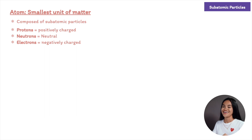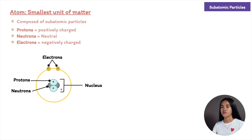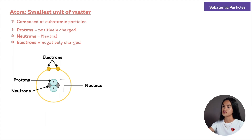Let's draw this out. The atom contains a dense central nucleus. The nucleus is made up of the positively charged protons and the electrically neutral neutrons, so the protons give the nucleus a positive charge. The negatively charged electrons move around the nucleus at some distance from it.